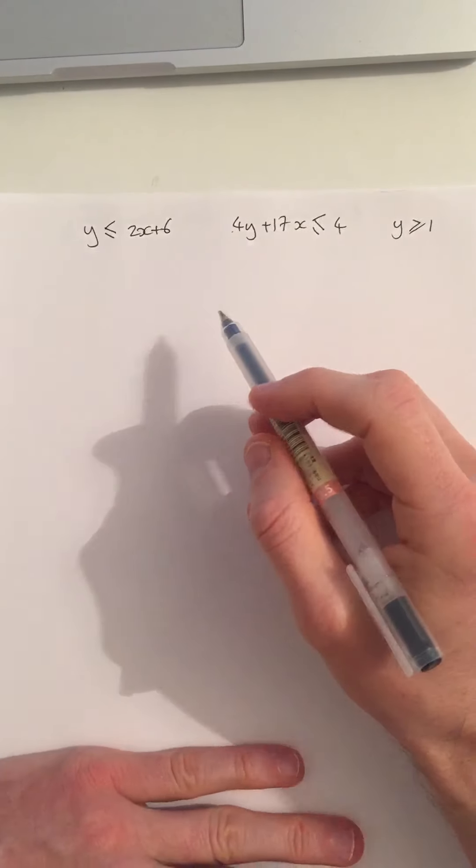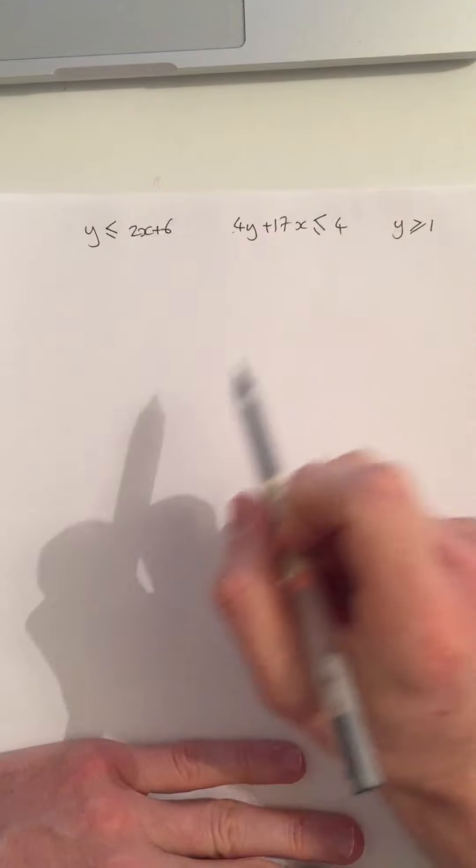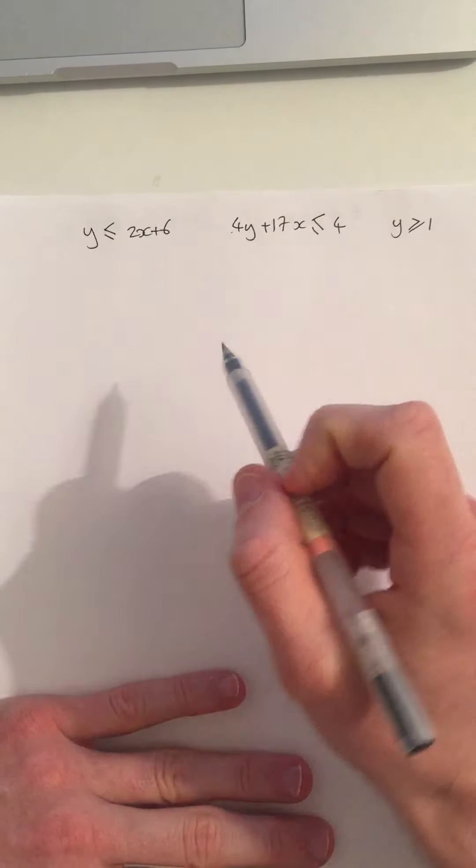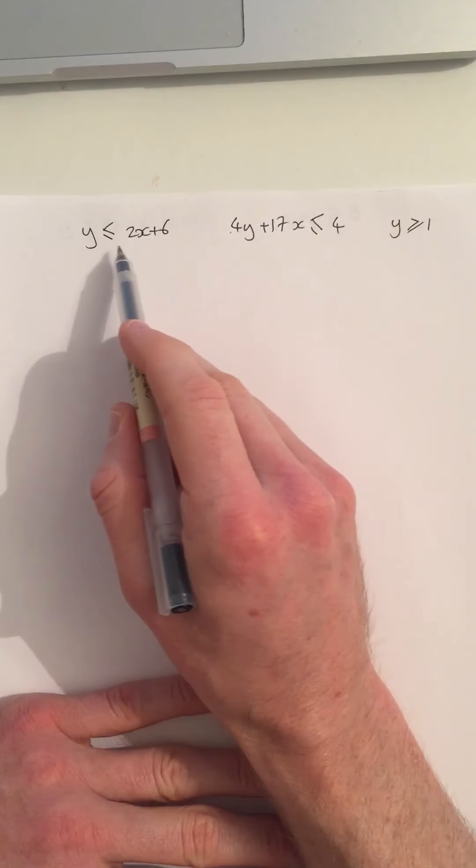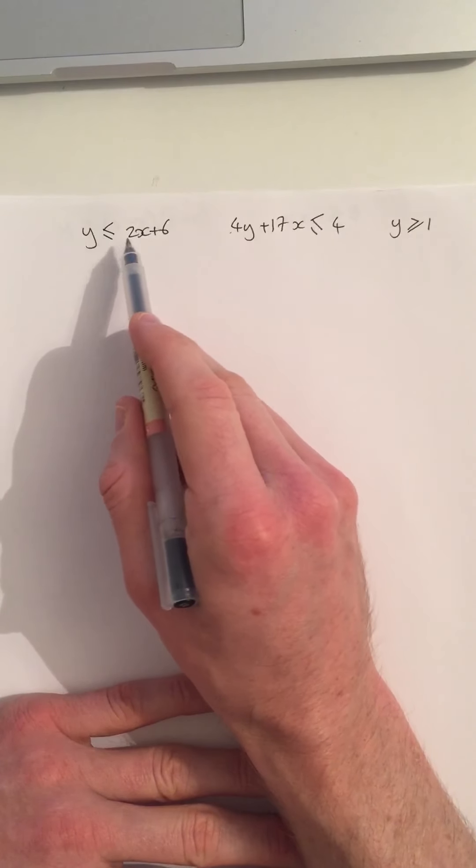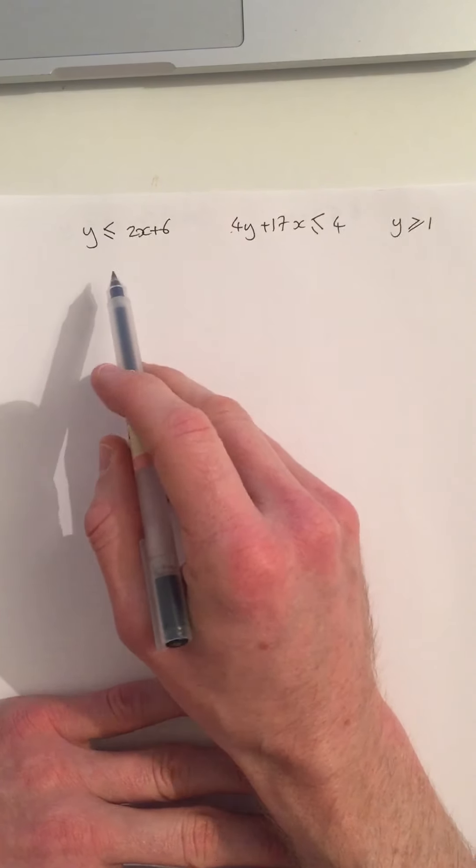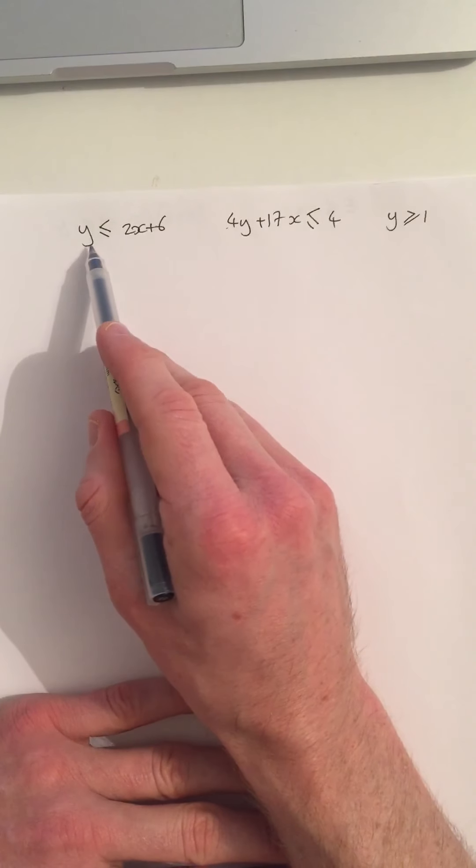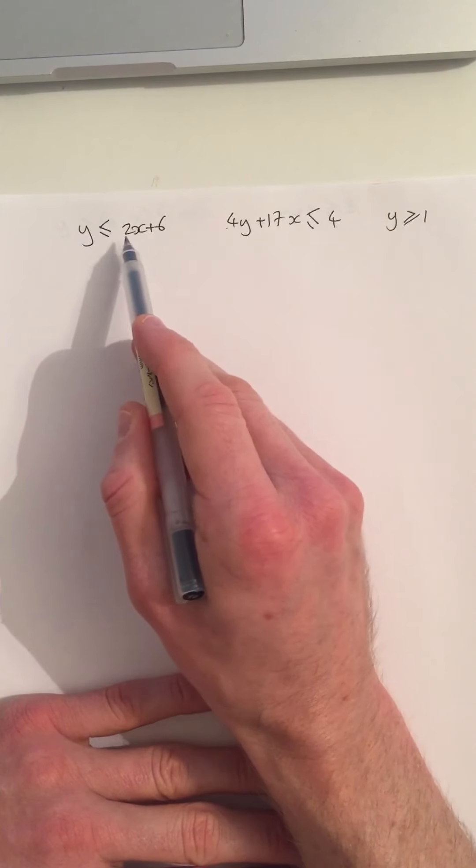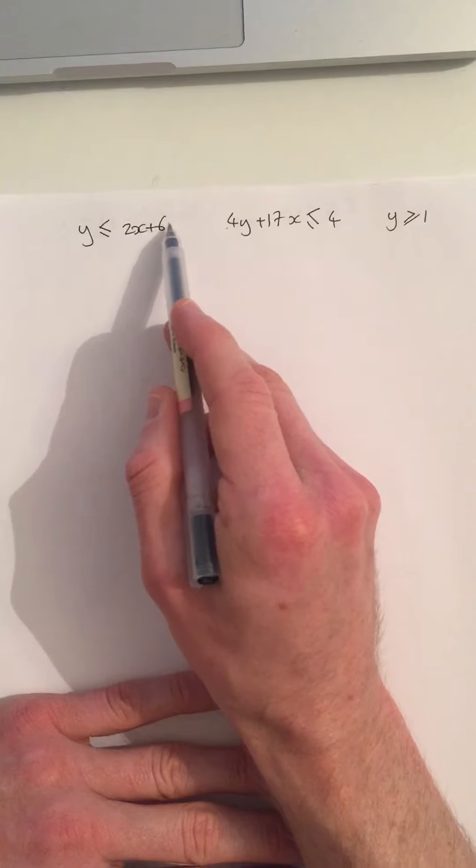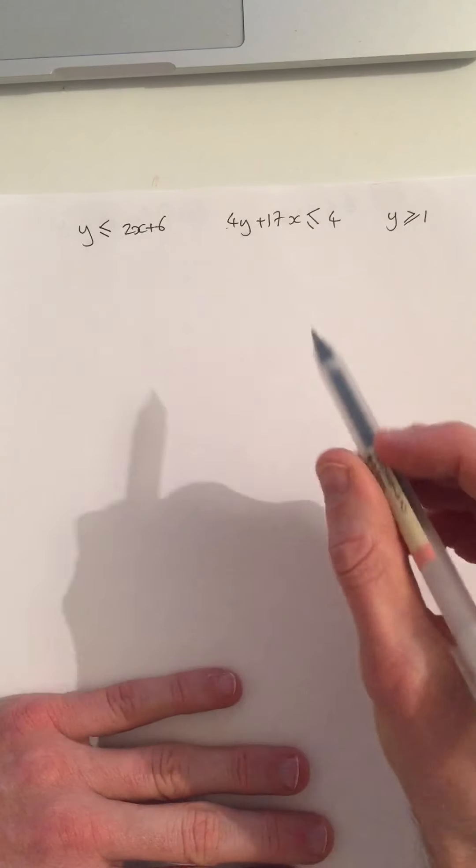So in question 1, we're asked to shade the region that obeys each of these rules. I can see that y has got to be less than or equal to 2x plus 6. So I'm going to draw this. I know it looks like a straight line, because this is of the form y equals mx plus c. So I know it's got a y-intercept of 6 and a gradient of 2.